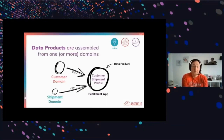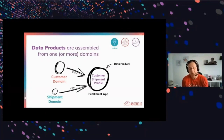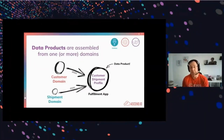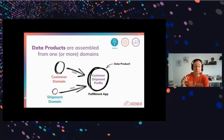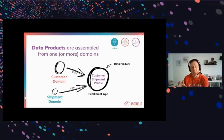Looking at this from a graphical view, this looks like a customer domain — first name, last name, where you live — and maybe a shipment domain with carrier information, shipment type, and all kinds of other information. Maybe I have a data product I want to build for an app that looks like a customer shipment profile. Clearly I need some customer information and the shipment history, and then I can build a customer profile for a fulfillment app. In the mesh world, I can build this as a combination of only two domains and really simplify the access to this information.